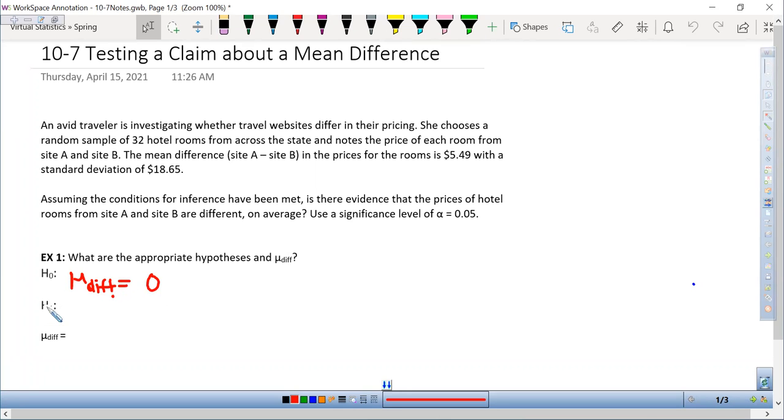So our null hypothesis is that the variable mu sub diff is equal to 0. Our assumption is always that they're the same, that there's no difference.